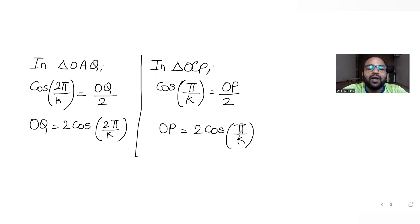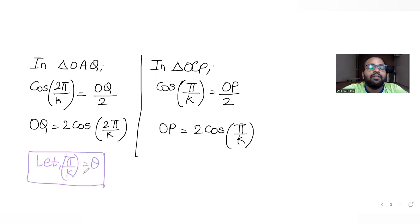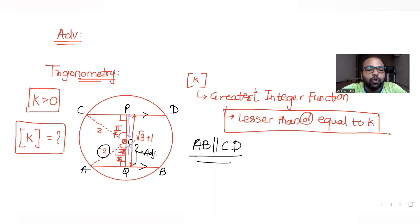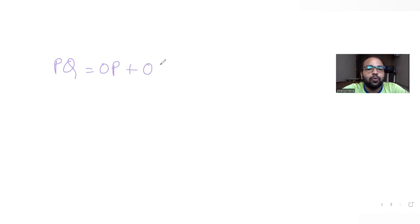To simplify, let's substitute θ = π/k. Once we find θ, we'll back-substitute to get k. With this substitution, OQ = 2·cos(2θ) and OP = 2·cos(θ). Adding these gives the total distance PQ = √3 + 1.